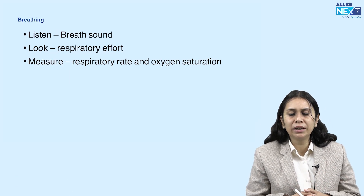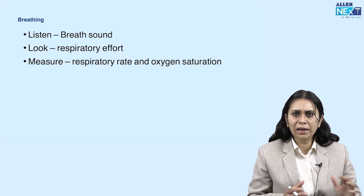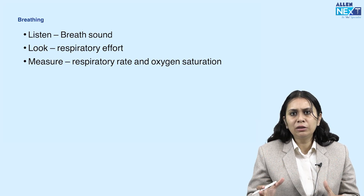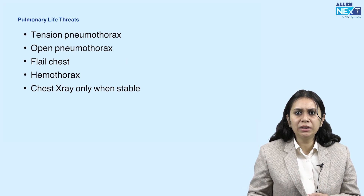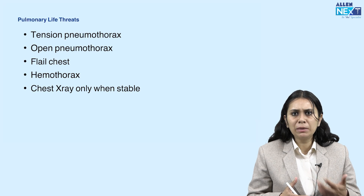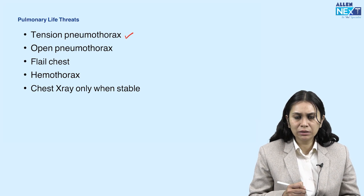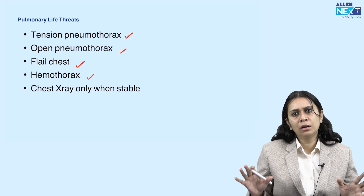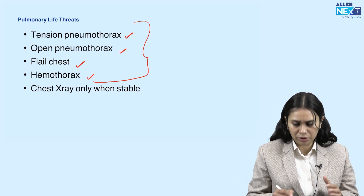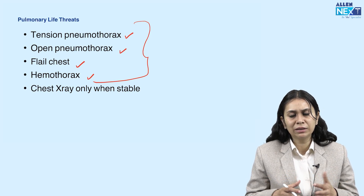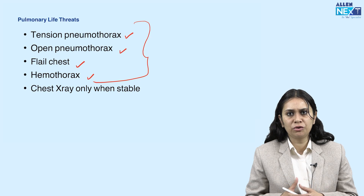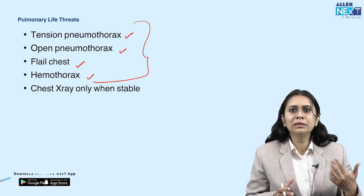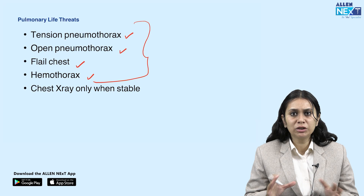Once the airway is secured, we think about breathing. To assess breathing, listen for breath sounds, look at the respiratory effort of the patient, calculate the respiratory rate, and attach a pulse oximeter to check oxygen saturation. The pulmonary life threats — in a trauma patient — could be pneumothorax, flail chest, or hemothorax. Chest X-ray is never a priority; these conditions should be diagnosed clinically and managed first.